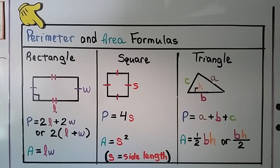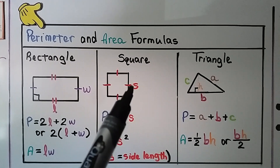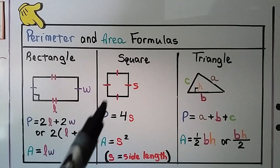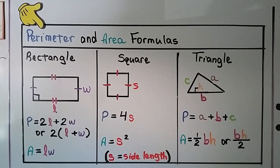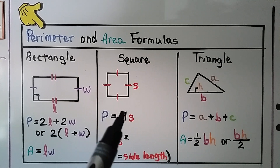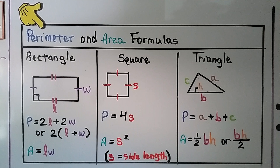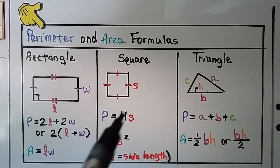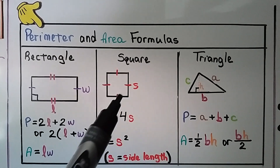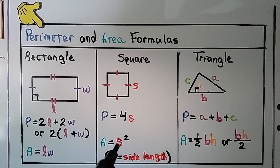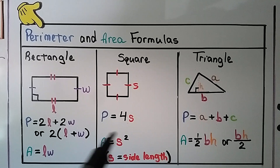For a square, because it has 4 sides that are all the same length, the perimeter P is equal to 4 times s for side length. The area would be a side length times a side length, so it would be s squared.